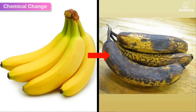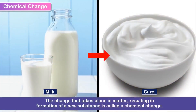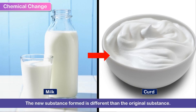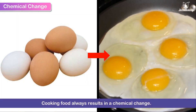Chemical Change. The change that takes place in matter resulting in the formation of a new substance is called a chemical change. This new substance is different from the original substance. Cooking food always results in a chemical change.